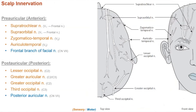In terms of innervation of the scalp, anterior to the ear, sensory innervation is from the trigeminal nerve. We have the supratrochlear and supraorbital anteriorly, which are branches of the frontal nerve, which comes off of the ophthalmic nerve.